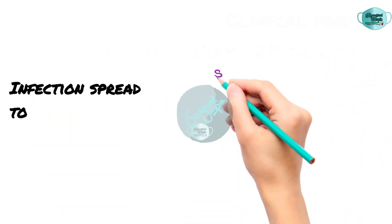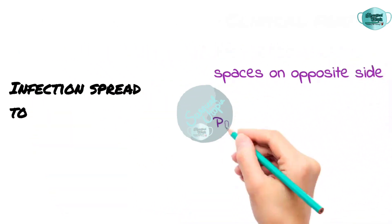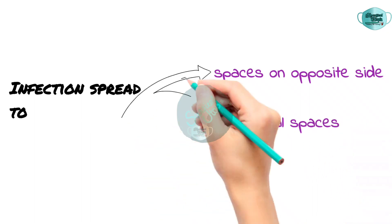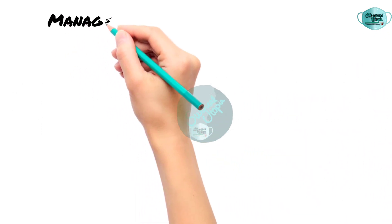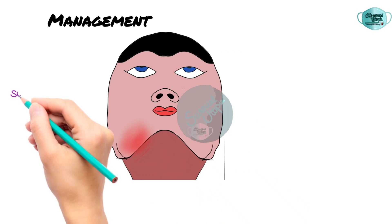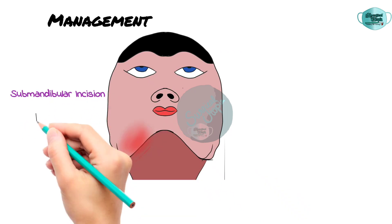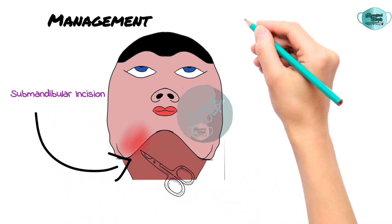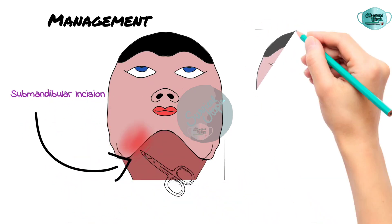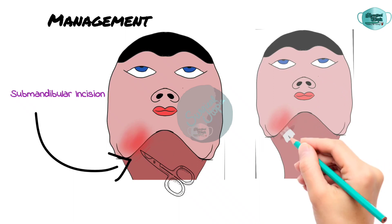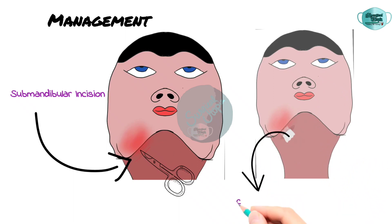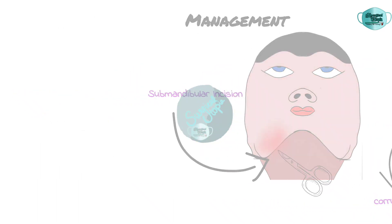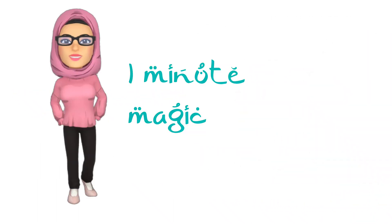The infection from the submandibular spaces can spread along the midline to the contralateral spaces and to the contiguous pharyngeal spaces. Management includes incision and drainage by giving an incision either intraorally or extraorally on the most dependent area, and securing a corrugated drain via suture, while the patient is kept under antibiotic coverage.